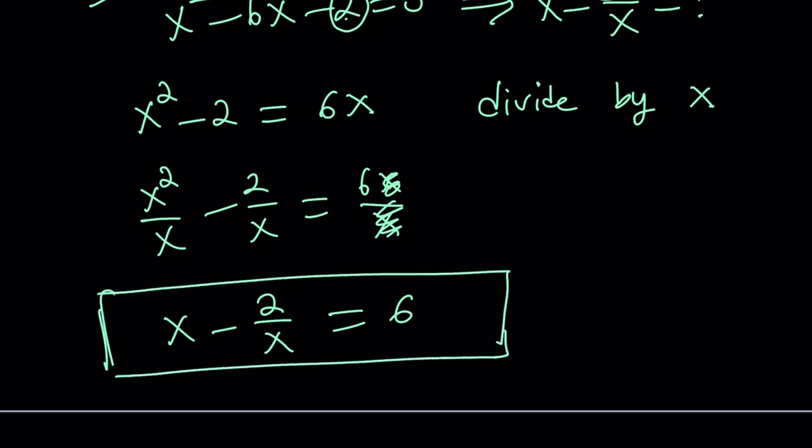And again, there's probably other ways to do it. You know, you can just isolate x squared, write it in terms of 6x plus 2, and then plug it in, so on and so forth.